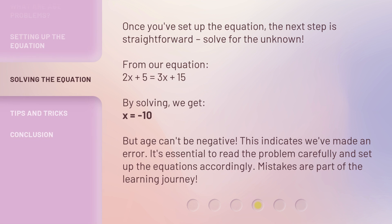Once you've set up the equation, the next step is straightforward: solve for the unknown. From our equation, 2x + 5 = 3x + 15. By solving, we get x = -10.